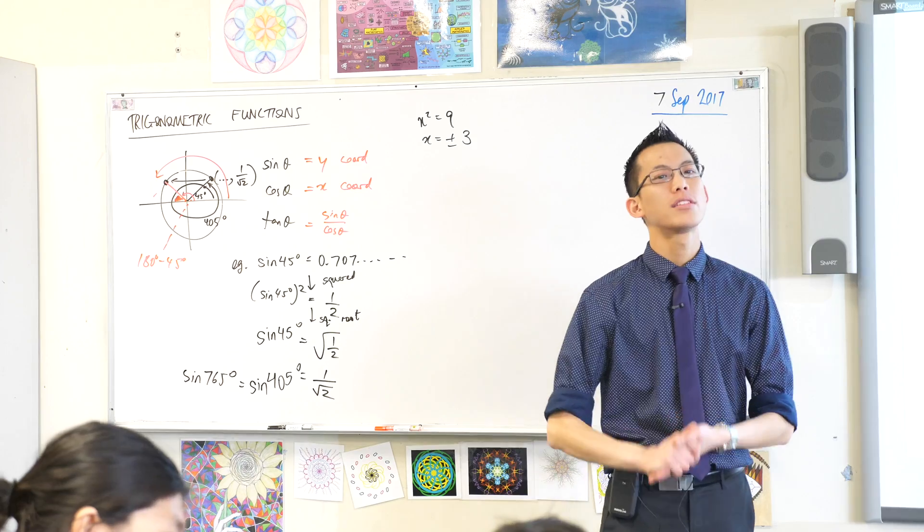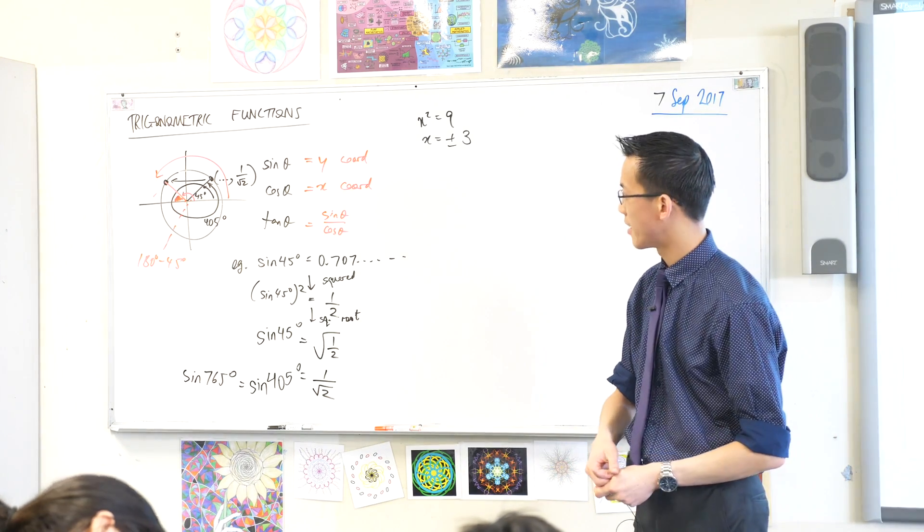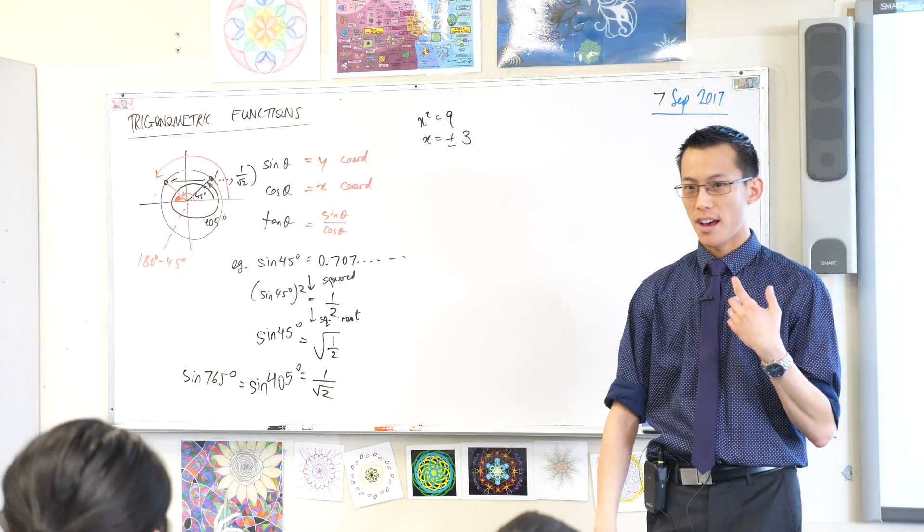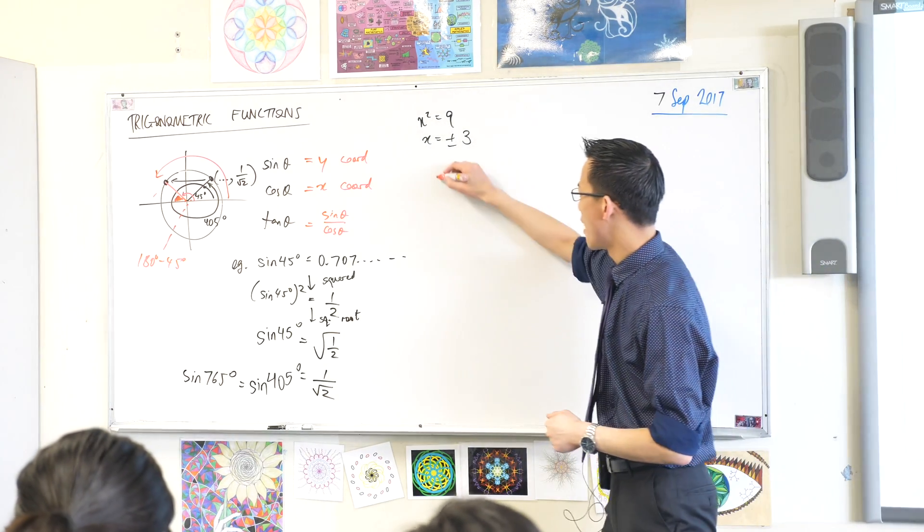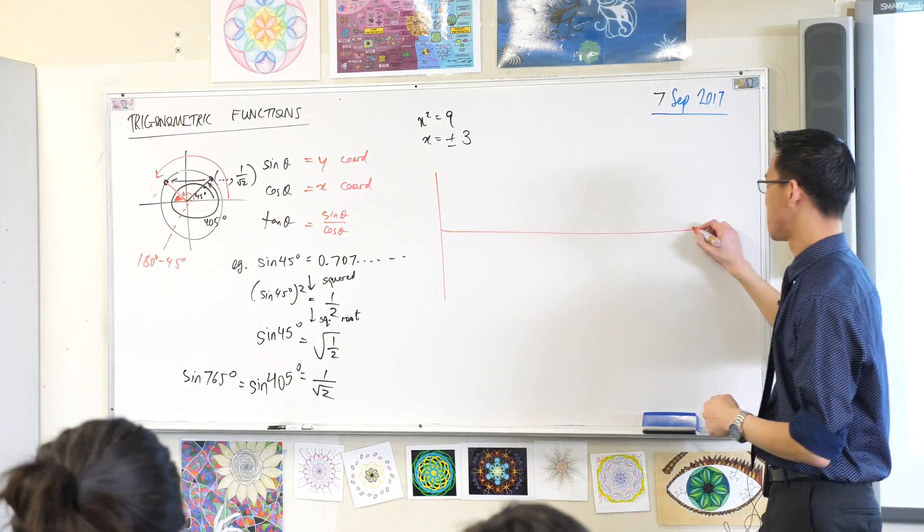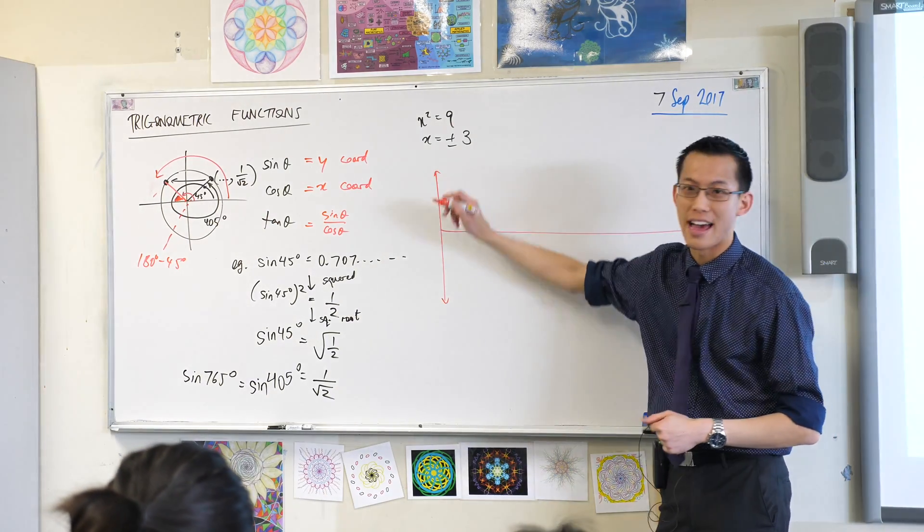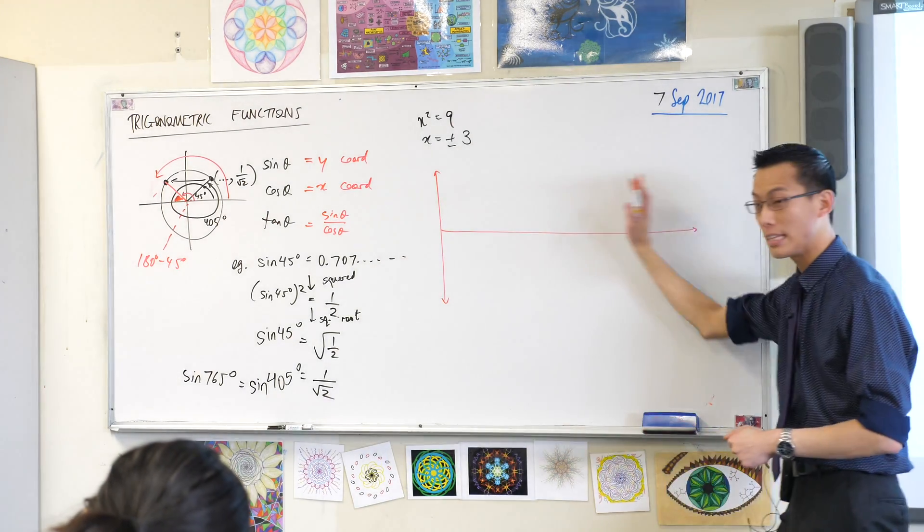And what I want us to do is to put this all together. Can you draw for me a set of axes, but in a little bit of an unusual way? We're only going to draw the right-hand side of this set of axes. And it's going to be really, really long. Okay?